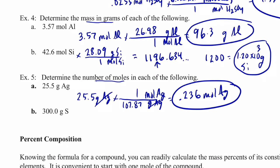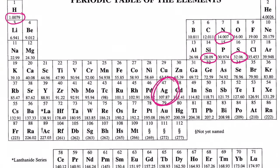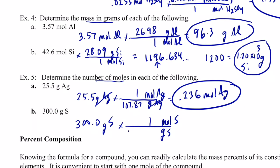Last review problem: 300.0 grams of sulfur — grams on the bottom, moles on top, one per mole. Sulfur is 32.06 grams per mole. So 300.0 divided by 32.06 gives us, to four significant figures, 9.357 moles of sulfur.